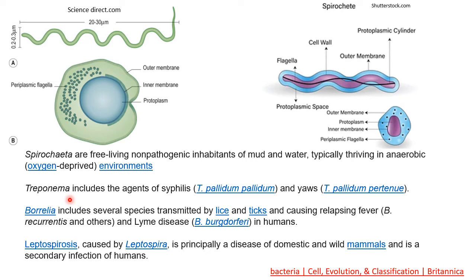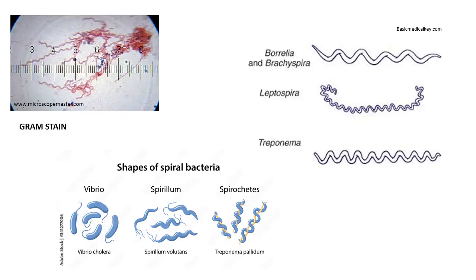Treponema is one example of Spirochetes. It includes the agents of syphilis — that is Treponema pallidum pallidum — where the second pallidum is the subspecies. It also causes yaws, that is Treponema pallidum pertenue. For relapsing fever, an example is Borrelia recurrentis and others. Lyme disease is caused by Borrelia burgdorferi in humans. Leptospirosis is caused by Leptospira and is principally a disease of domestic and wild mammals, and is a secondary infection to humans as well.